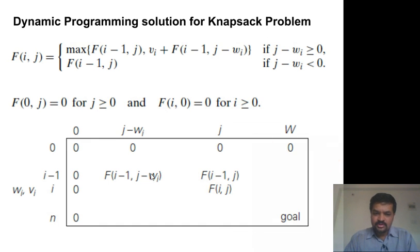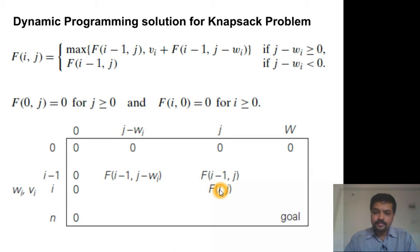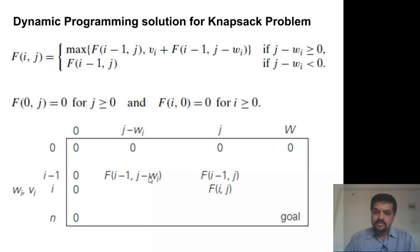To recap: f(i, j) is the optimal solution for using the first i items with knapsack capacity j. This value is the max of two possible cases — not choosing the i-th item (giving f(i−1, j)) or choosing the i-th item (giving v_i + f(i−1, j − w_i)), since i−1 items are then allowed with the capacity reduced by w_i. We fill the whole table bottom-up and at the last cell we have the solution.